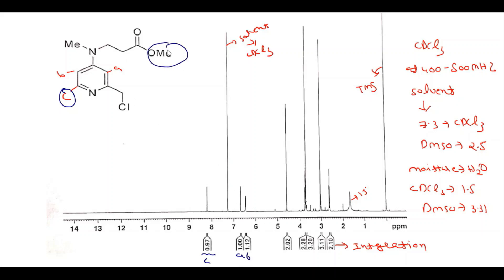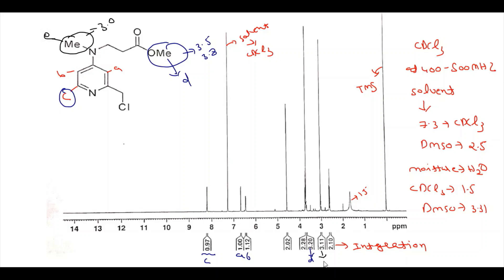Now let us look at the methoxy proton. I already told you this value will be approximately 3.5 to 3.8. So looking at 3.5 to 3.8 — three protons. These three protons I have labeled as proton D. So this is our methoxy proton D. Now let's look at other protons like the N-methyl proton. I already mentioned these three protons will be approximately 3, which we calculated. So these are the three protons of the N-methyl group, labeled as proton E.